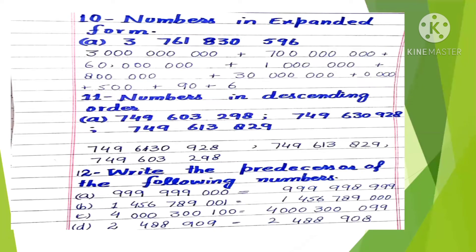Question 10: Numbers in expanded form. To write in expanded form, we write the first digit and put zeros counting the digits written to its left. Similarly we write the next number and put zeros counting the digits on the right-hand side. For example, counting zeros after 7: one, two, three, four, five, six, seven, eight — so we write 7 followed by eight zeros. Similarly we expand the next number. You will do Part B yourself.